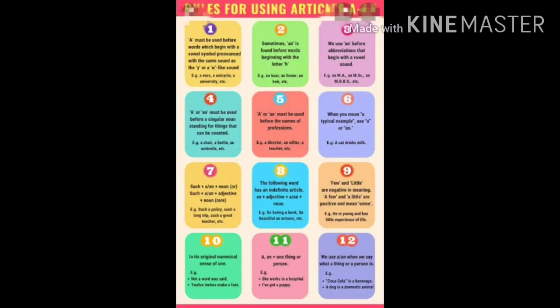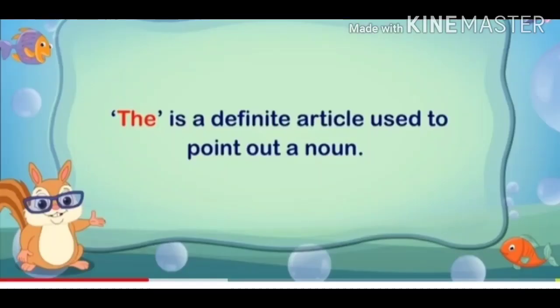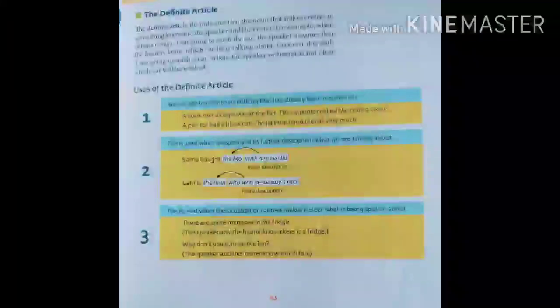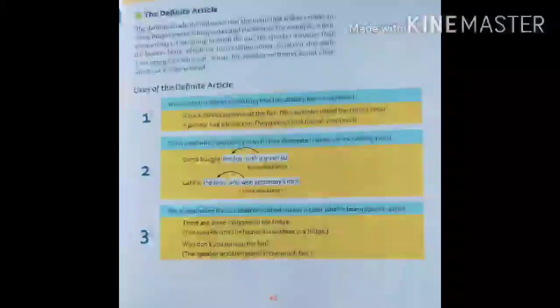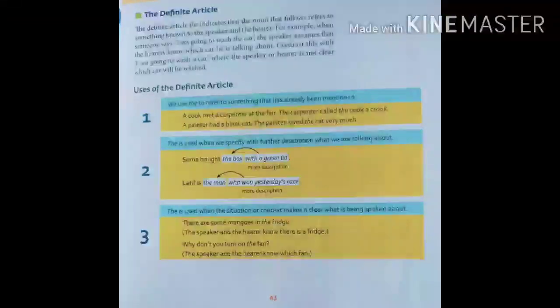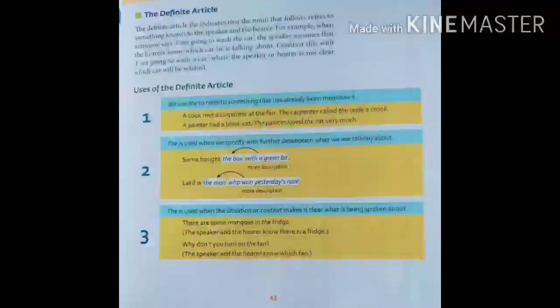Now let's come to the definite article THE. THE is a definite article used to point out a noun. The definite article THE indicates that the noun that follows refers to something known to both the speaker and the hearer. For example: when someone says 'I am going to wash the car', the speaker assumes that the hearers know which car he is talking about. In contrast, 'I am going to wash a car' — here both speaker and hearer are not clear which car will be washed.